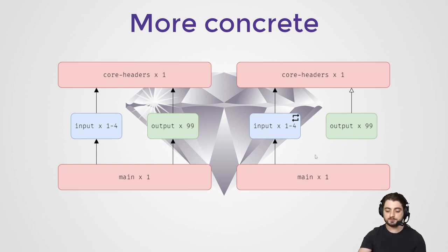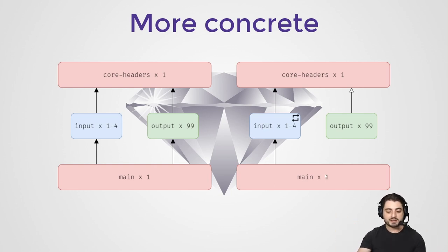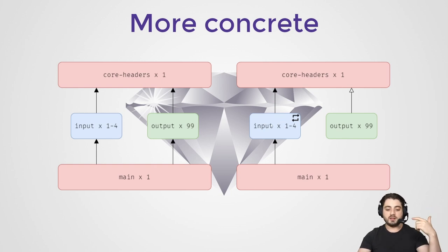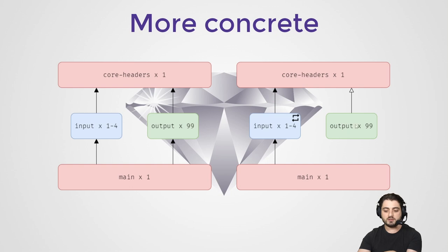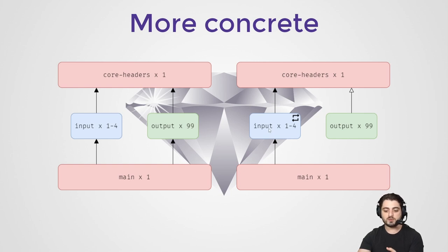Whenever something happens — an HTTP call comes in, a message comes in, a user types something — we call a method on some trait. The implementation of that trait is in the output. There are two kinds of traits in core: one is for the input to call, and the other traits are for the output to implement. I call them boundary — inputs go through the boundary to call the core. The other ones I call gate (used to call them gateway, gate is shorter). Usually a gate is a facade for all the other traits. Through this facade you go to these other ones — this is the request-response cycle.